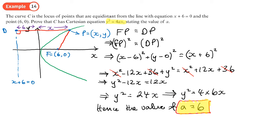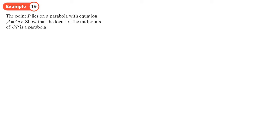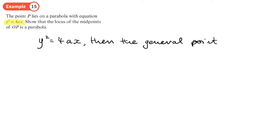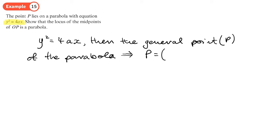The point P lies on a parabola with equation y squared equals 4ax. We need to show that the locus of the midpoints of OP is a parabola. The general point P on the parabola y squared equals 4ax is given by the parametric coordinates (at squared, 2at).